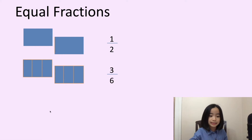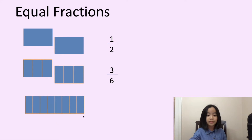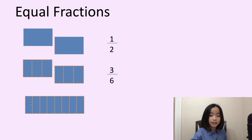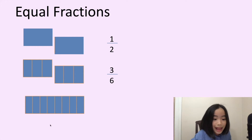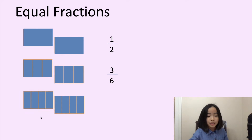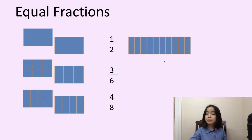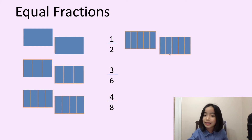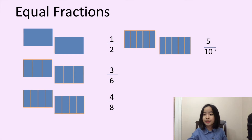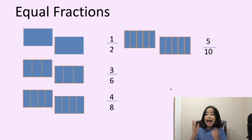Now, let's look at this example. Again, I have the same rectangle, but I am going to divide it into eight pieces. Now, I am going to take four pieces away. This is known as four-eighths. Again, here, I have the same rectangle, but I divided it into ten equal pieces. I took five pieces away. This is known as five-tenths. So, these fractions are equal because they are all taking half away.